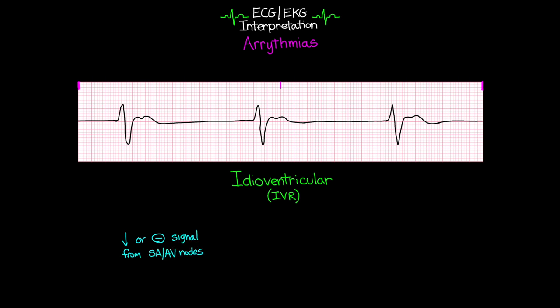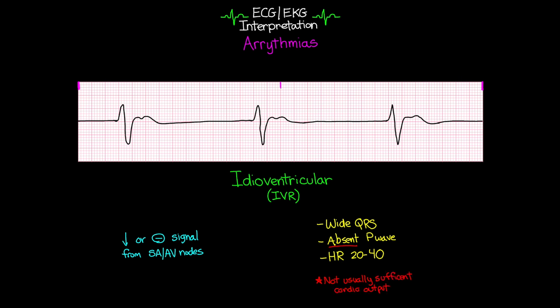Going over some of the defining characteristics: first, you're going to have a wide QRS. You're going to have absent P waves. And finally, you're going to have a heart rate that falls within our ventricular intrinsic rate of 20 to 40. This is important to know because at this rate, and without having that atrial kick due to that absent P wave, this is not usually going to have a sufficient cardiac output. So this is potentially a life-threatening condition.